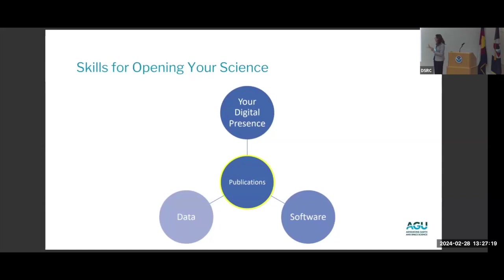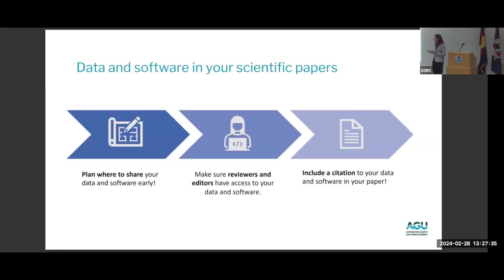So we've talked about digital presence, data, and software — the non-traditional elements of open science. Now I want to talk about publication, something very central to science. Specifically, how to make your research more open, more reproducible, and more transparent by sharing your data and software alongside your paper, and by building those linkages of credit and attribution between your paper, data sets, and software.